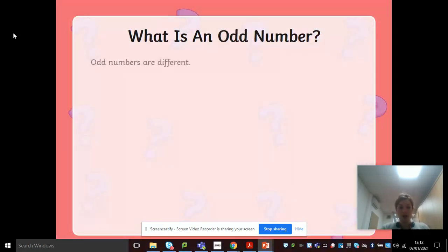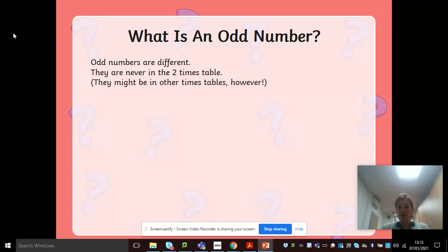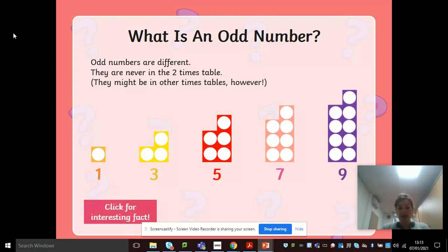So moving on, what is an odd number? Odd numbers are different. They are never in the two times tables. They might be in other times tables, however. So odd numbers are one, three, five, seven and nine.